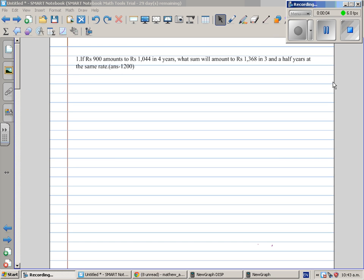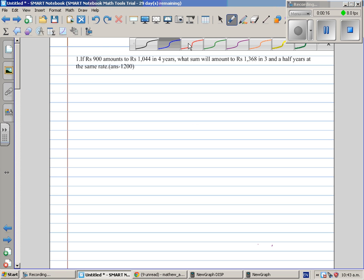Now this problem was sent to me by a student, and he is also given the answers. All these problems are on simple interest. So let's read the first question. If 900 rupees amounts to 1044 in four years, what sum will amount to 1368 in three and a half years at the same rate?